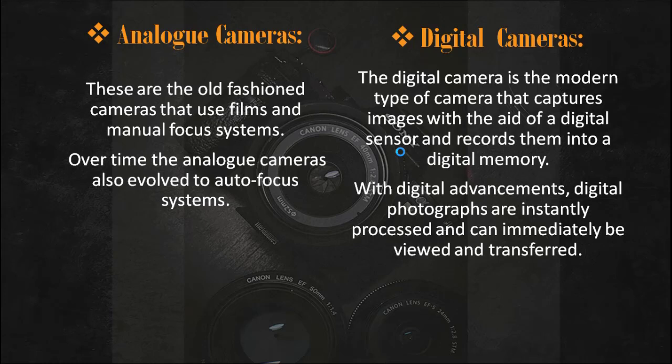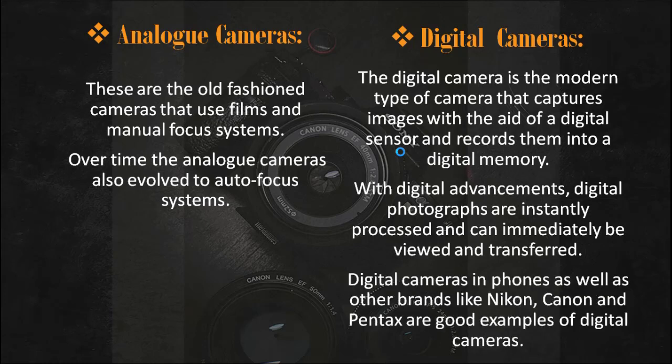In the analog days you could only snap a photo, and after processing your film to a negative in a dark room, that is when you could see what you had captured. If you made mistakes you would only find out and correct them days after snapping. But in digital photography you see what you snap immediately and can make corrections right away. Digital cameras include the cameras in your phones and brands like Nikon, Canon, and Pentax.